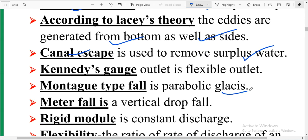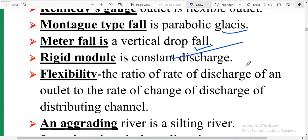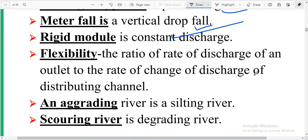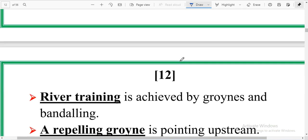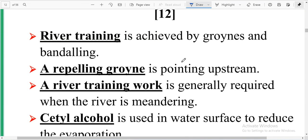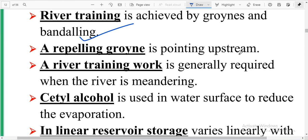Montague's type fall is parabolic. Glacis meter fall is a vertical drop. Rigid module is a constant discharge. Flexibility is the ratio of rate of discharge of an outlet to the rate of change of discharge of distributing channel. River training is achieved by groins and bundling.